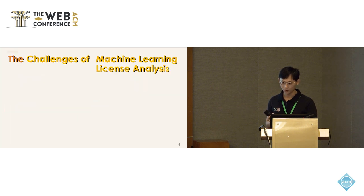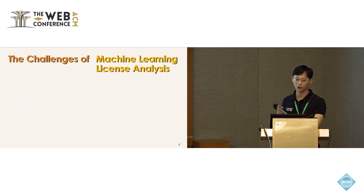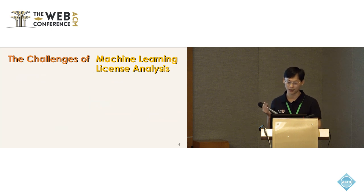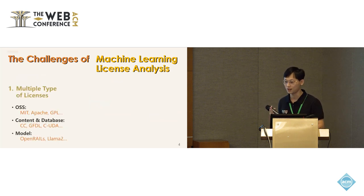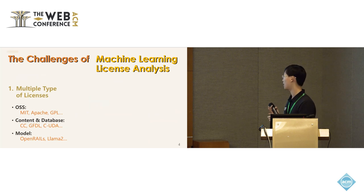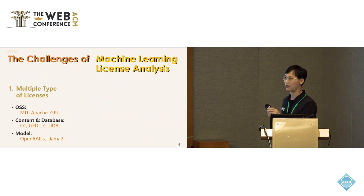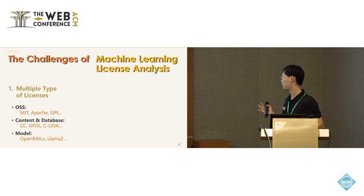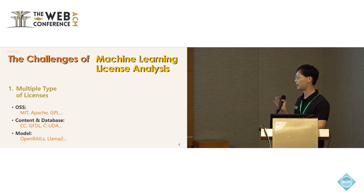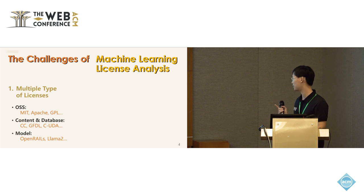Here I show you three challenges in machine learning license analysis. The first challenge is that there are multiple types of licenses. We have open source software licenses like MIT, Apache, and GPL, and we have data licenses like Creative Commons.